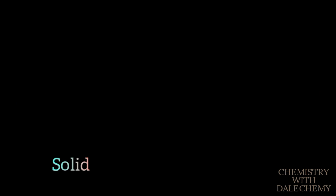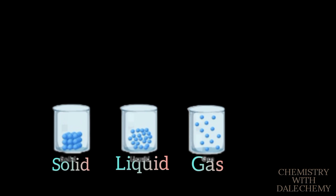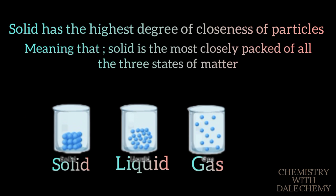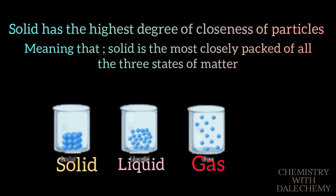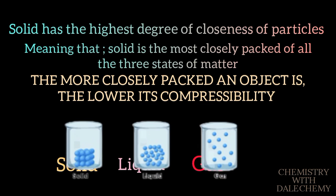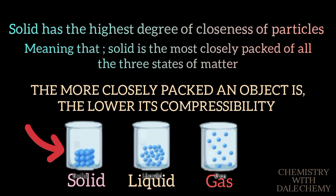Basically, matter exists in three forms: solid, liquid, and gas. Solid has the highest degree of closeness of particles — it is the most closely packed of all three states of matter. So it has the lowest compressibility, because it is closely packed, so there won't be enough space for the molecules to be compressed. This is followed by liquid, and then by gas. So gas has the highest compressibility of all three states of matter.